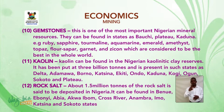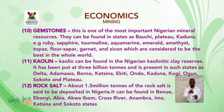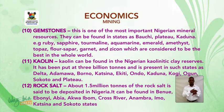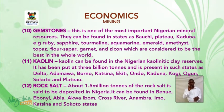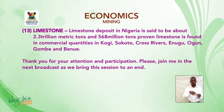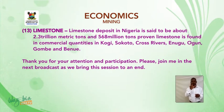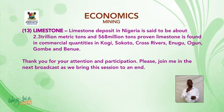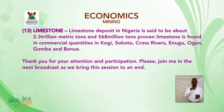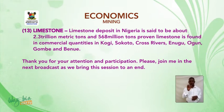Rock salt — about 1.5 million tons of rock salt is said to be deposited in Nigeria. It can be found in Benue, Ebonyi, Abia, Akwa Ibom, Cross River, Anambra, Imo, Katsina and Sokoto state. And last but not least, limestone — limestone deposits in Nigeria are said to be about 2.3 trillion metric tons with 568 million tons proven. Limestone is found in commercial quantities in Kogi, Sokoto, Cross River, Enugu, Ogun, Gombe and Benue state.